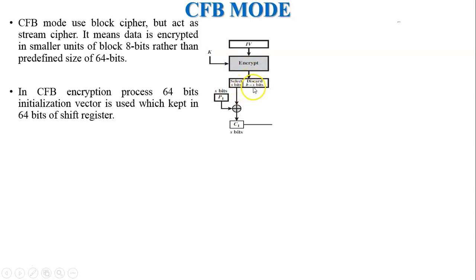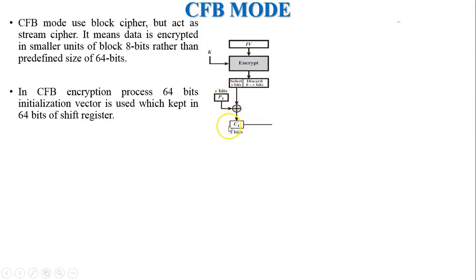From this 64-bit output, the block size is b. We select s bits — here s is equal to 8 bits — and the remaining b minus s, which is 56 bits, is discarded. The selected left-hand-side s bits are XORed with plain text P1. The size of plain text P1 is s bits, so s equals 8 bits. This generates cipher text C1, and the size of the cipher text block is the same as the plain text block.